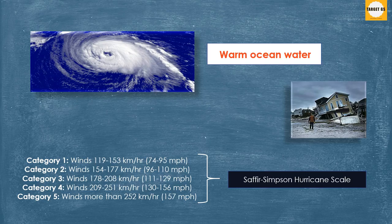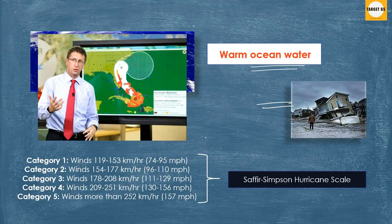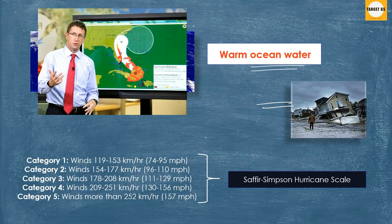From an exam point of view, we should know that hurricanes form over warm ocean water and sometimes they strike even land. Once a hurricane forms, weather forecasters can predict its path and how strong it will get. We should also know that there are five types or categories of hurricanes.